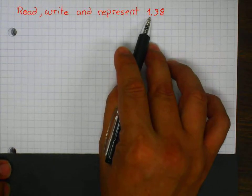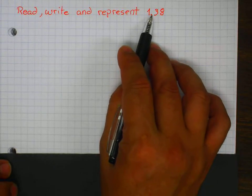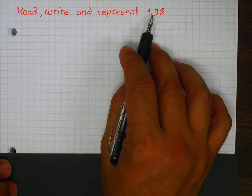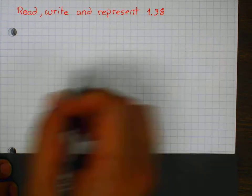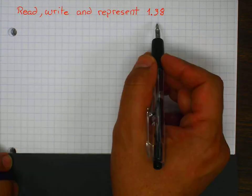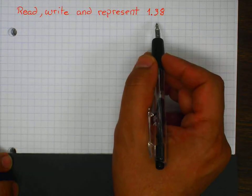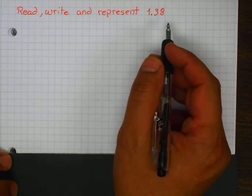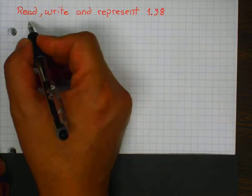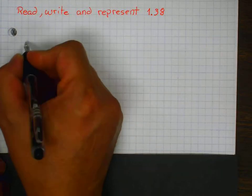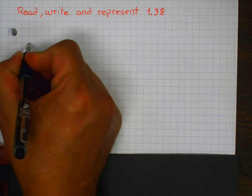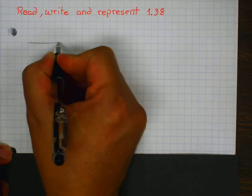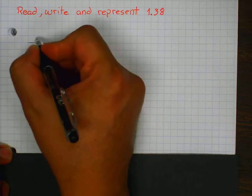We're going to present this decimal number, starting with the reading and the writing. I need my place value chart. I'm going to make my place value chart, and remember this place value chart is going to change a little bit because this is the decimal place value chart.